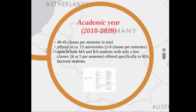Each institute teaches between two and eight classes per semester; most teach between two and three, but there are three institutes that teach between five and eight. What is characteristic about this teaching is that most of these courses are open to both master and bachelor students at the same time, which is unusual. This makes it somewhat hard to use this data to address questions about what should be taught at the bachelor versus master level. There are only four or five classes per semester specifically addressed to master and doctoral students.